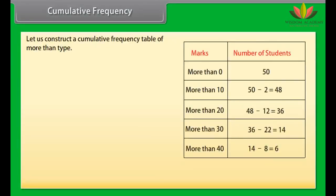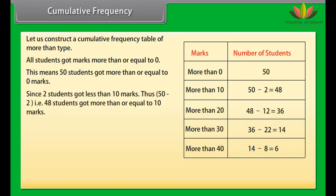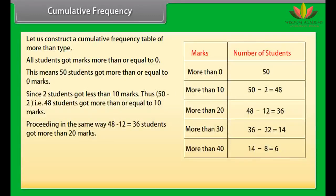Now let us construct a cumulative frequency table of more than type. All 50 students got marks more than or equal to 0. Since 2 students got less than 10 marks, thus 50 minus 2 equals 48 students got more than or equal to 10 marks. Proceeding in the same way, 48 minus 12 equals 36 students got more than 20 marks.